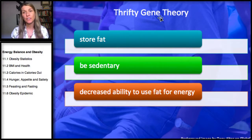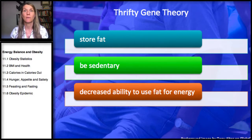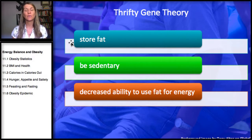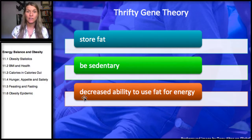The thrifty gene theory attempts to explain why some populations gain so much fat in our current food environment of food abundance. The idea is that individuals with this gene variant will have an increased ability to store fat, to be sedentary, and a diminished ability to use fat as fuel.